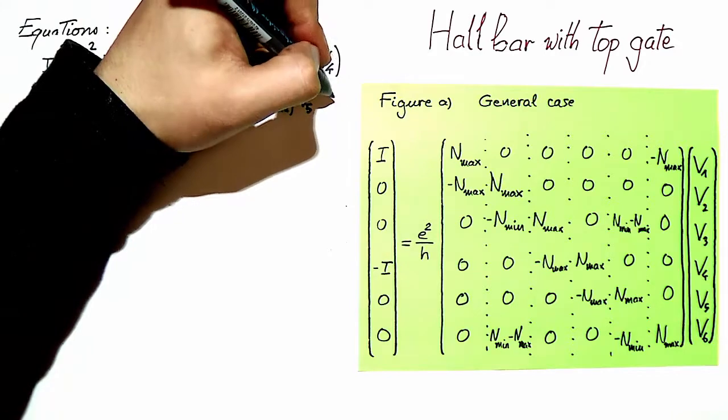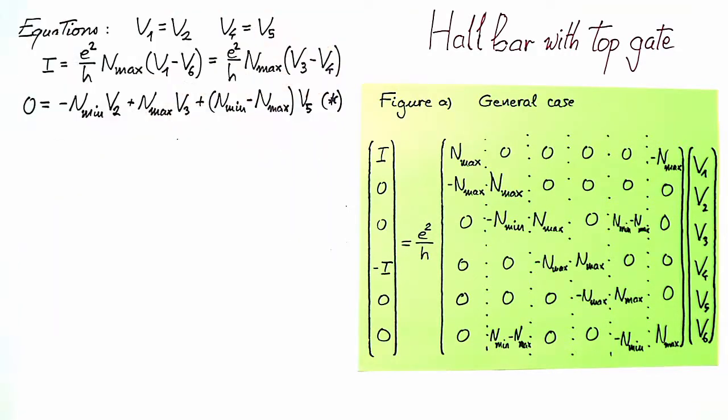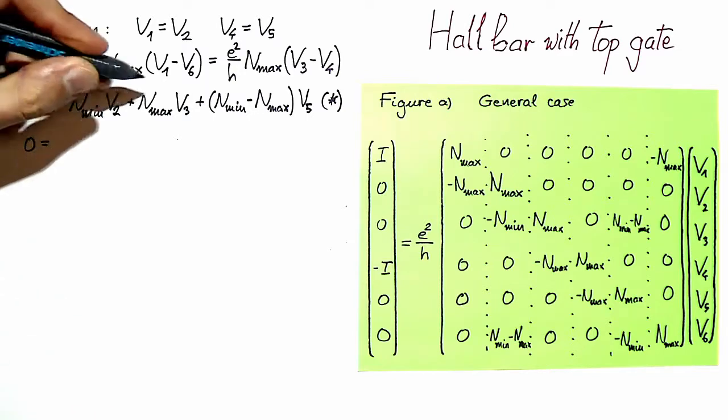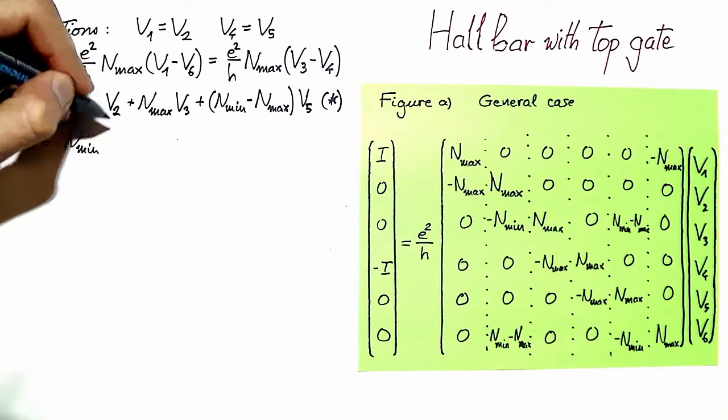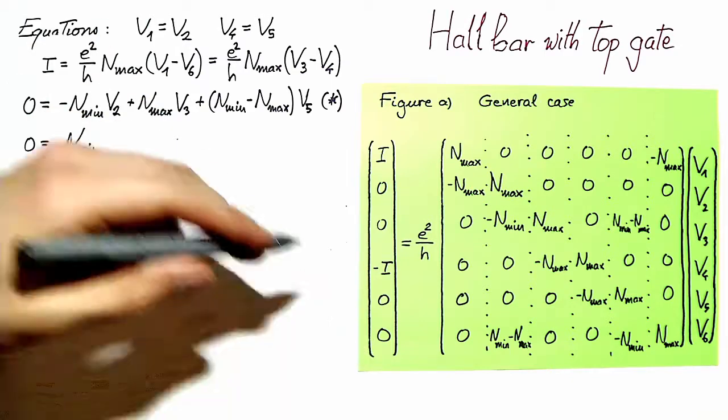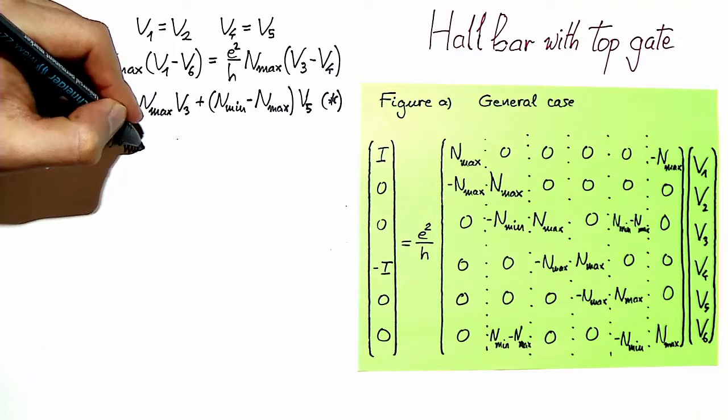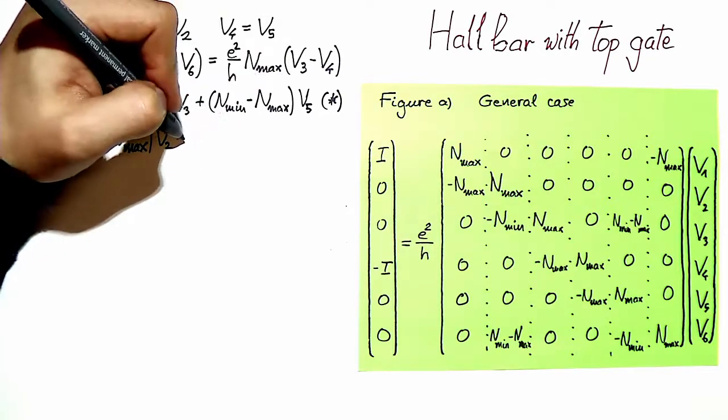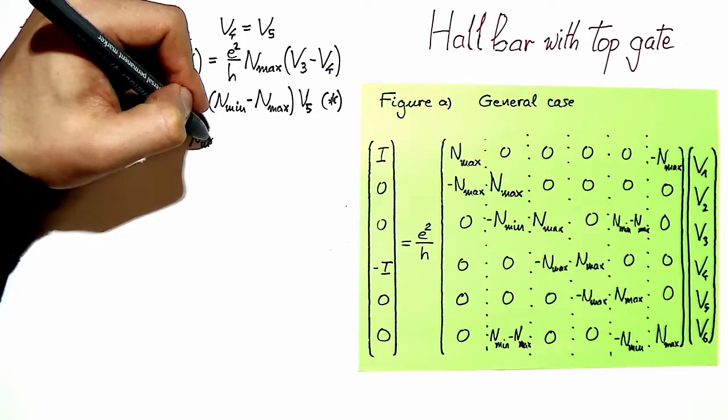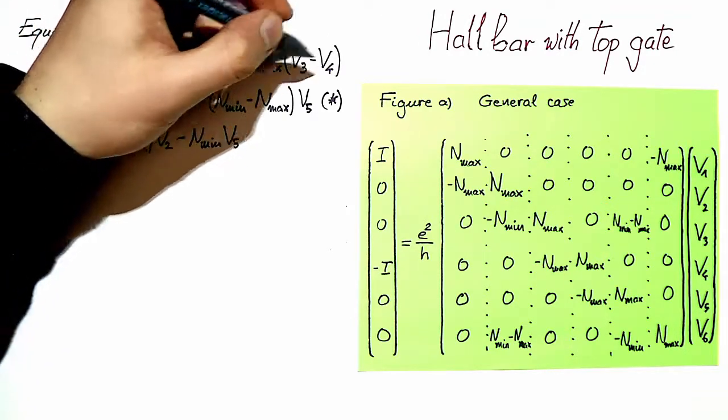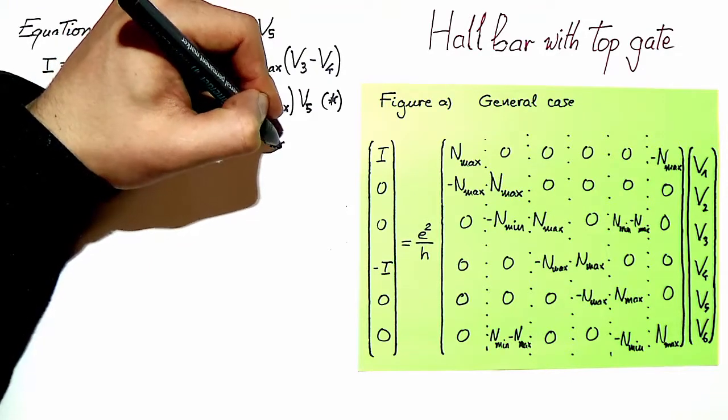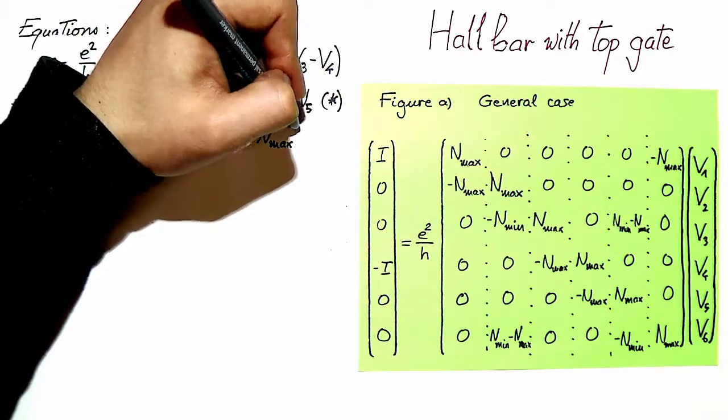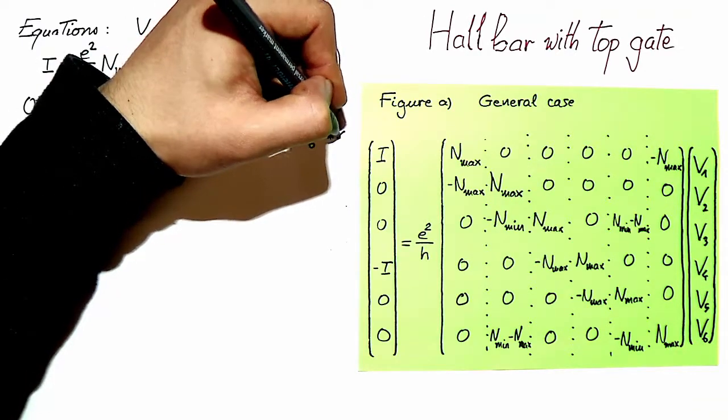Now the third and the sixth row give us equations that are a little more complicated. From the third we can read that 0 is equal to minus N_min times V2 plus N_max times V3, then we have this N_min minus N_max times V5. And that's all. And I call this equation star as I will refer to it later.